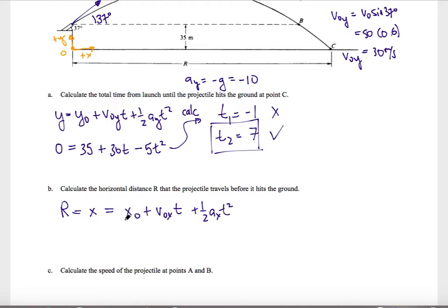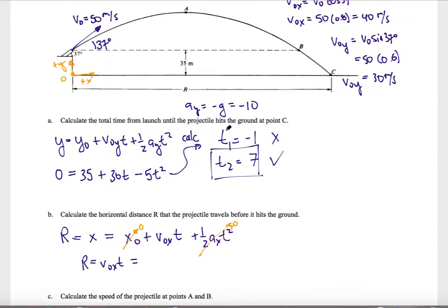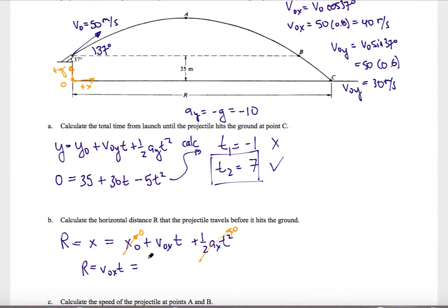And here my x0 is 0 because I'm starting at the origin for the x position. And my x acceleration is also 0. So my range then would just be v0x times t, or as I found above, my v0x of 40 times t.